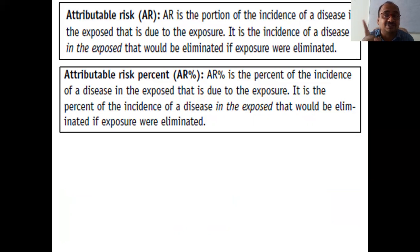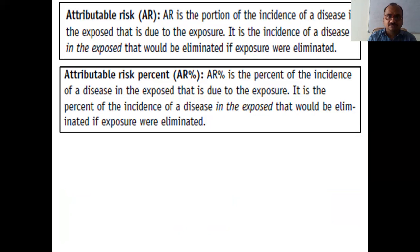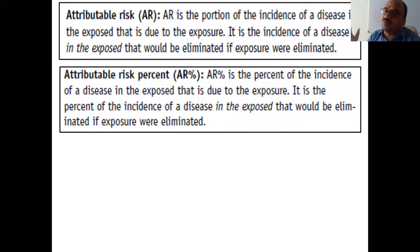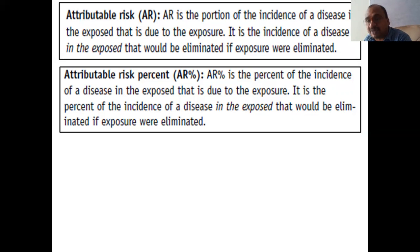Attributable risk (AR) is part of incidence, not prevalence. It is the portion of incidence of a disease in the exposed group — such as smokers — that would be eliminated if the exposure were eliminated. If a person stops smoking, they will not get the disease. Multiplying AR by 100 gives the attributable risk percentage.